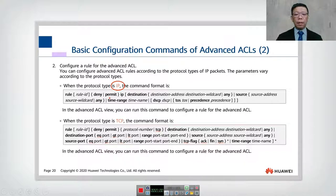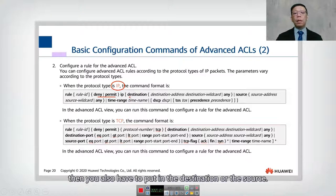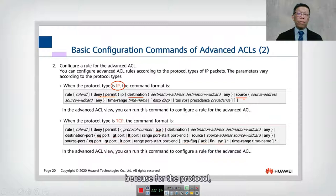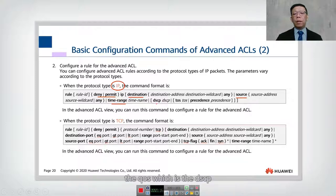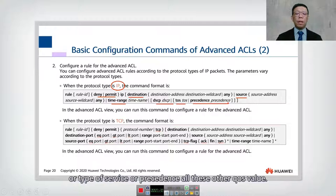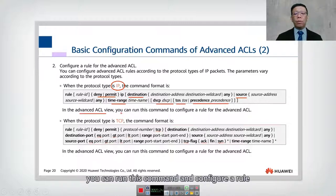You have the action of permit or deny — that's important. You also have to specify the source or destination, because for the protocol you always have a source and a destination. You also have the option to include a time range, QoS values such as DSCP, type of service, or precedence.